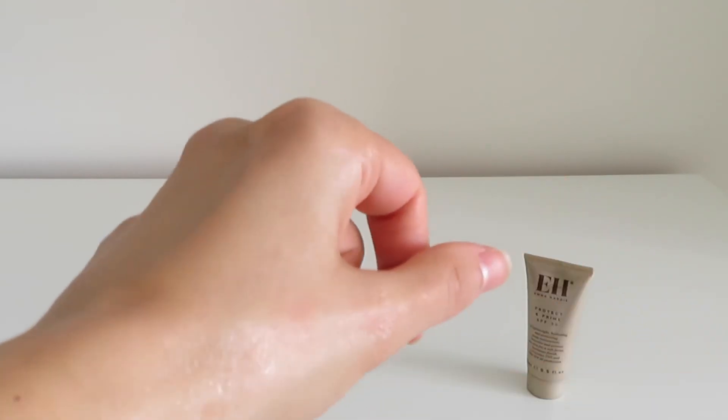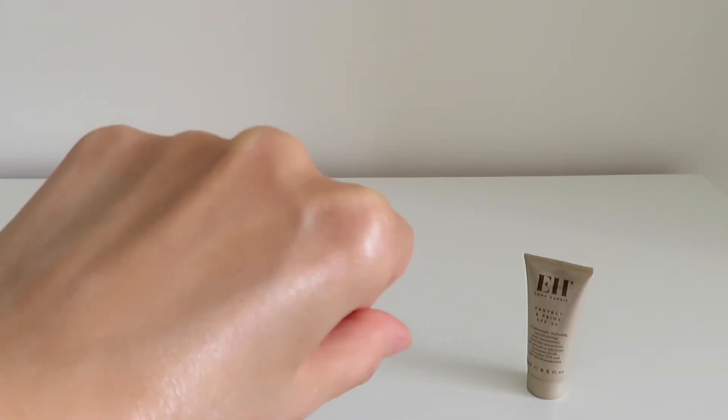Compared to Clarins sunscreen shown previously, Emma Hardy formula I like more. It's watery and lightweight. It sinks into the skin nicely. The only thing that I don't like is that it contains perfume as well.